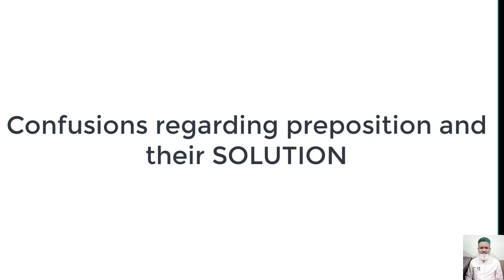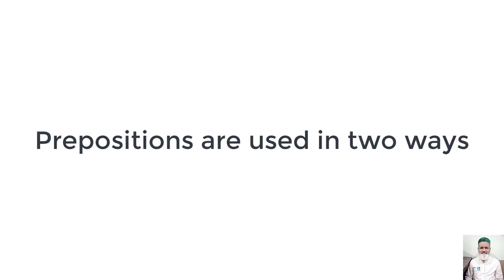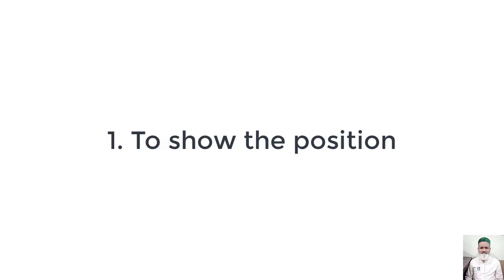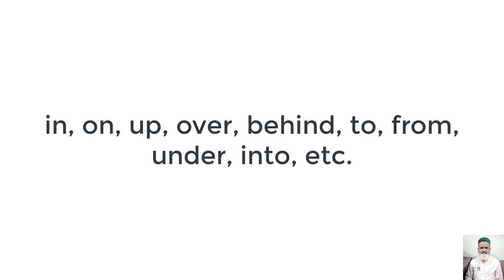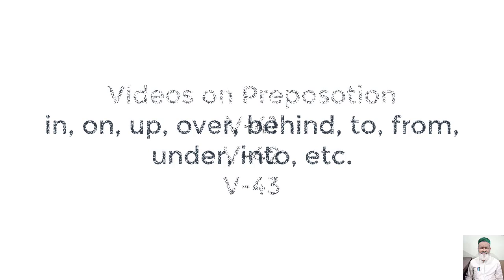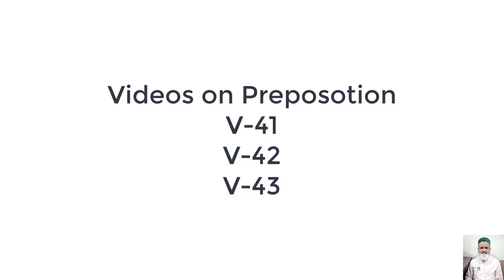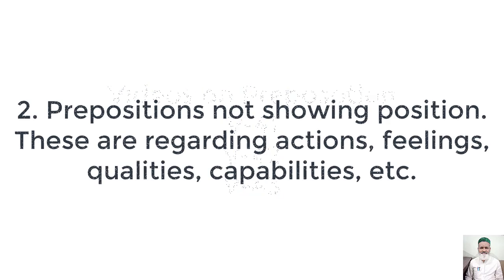Viewers, اس ویڈیو میں ہم prepositions سے متعلق confusions اور ان کے solution کے بارے میں بات کریں گے۔ بنیادی طور پر ہم prepositions کے استعمال کو دو قسموں میں divide کر سکتے ہیں۔ Number one: position show کرنے کے لیے جو prepositions کا استعمال ہوتا ہے اسے بآسانی سمجھا اور apply کیا جا سکتا ہے — مثلاً آگے، پیچھے، اوپر، نیچے، پاس، دور وغیرہ۔ لیکن جو دوسرا طریقہ ہے وہ position سے متعلق نہیں بلکہ feelings سے متعلق ہے۔